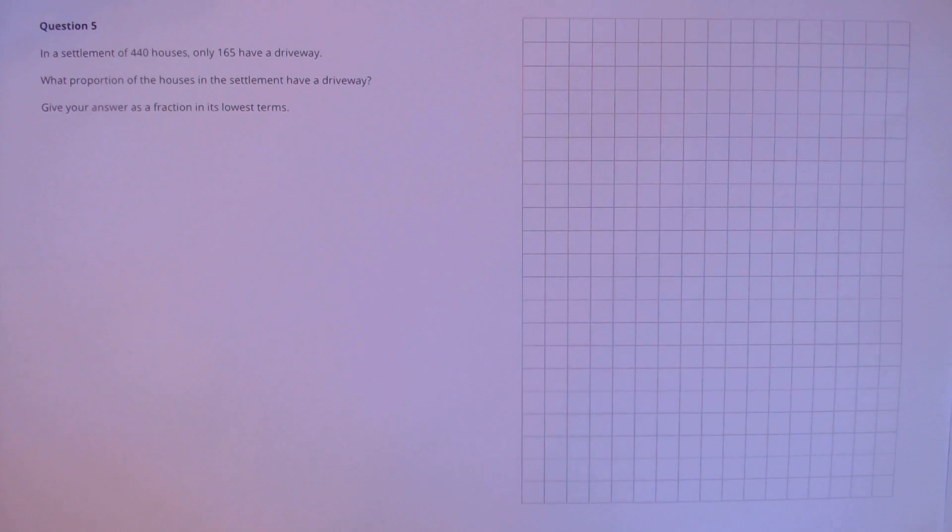Question 5: In a settlement of 440 houses, only 165 have a driveway. What proportion of the houses in the settlement have a driveway? Give your answer as a fraction in its lowest terms.